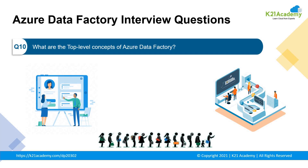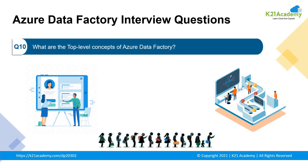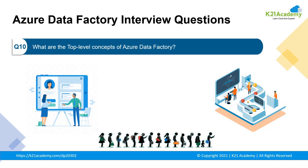Moving to our tenth question: what are the top-level concepts of Azure Data Factory? There are four basic top-level concepts. First is pipeline — it acts as a carrier in which various processes take place. Next is activities — activities represent the processing steps in the pipeline. Next we have data sets, which are the store of the data, essentially a data structure that holds our data. And last we have linked services — these store information that is important when connecting to an external resource, such as a SQL server connection string specifying the source and destination of the data.